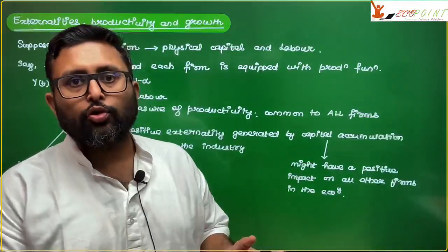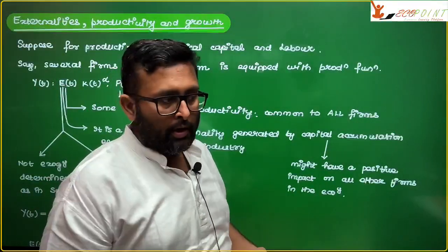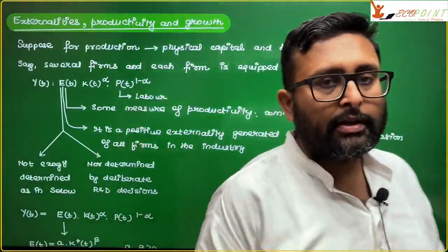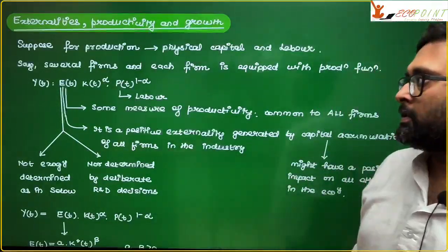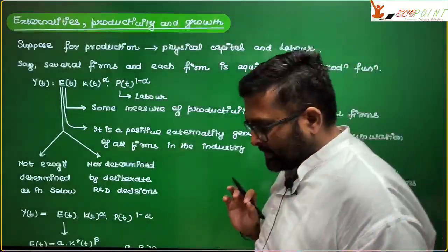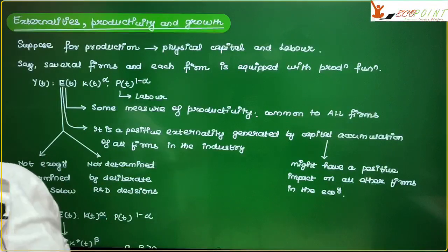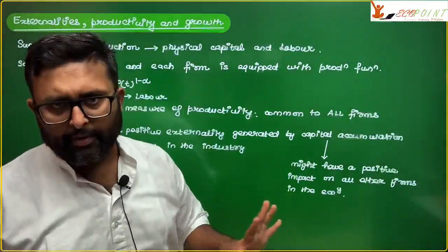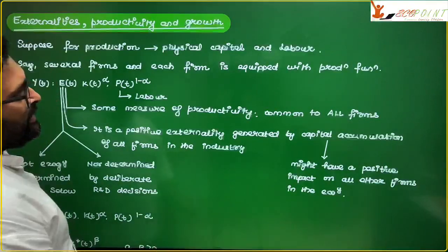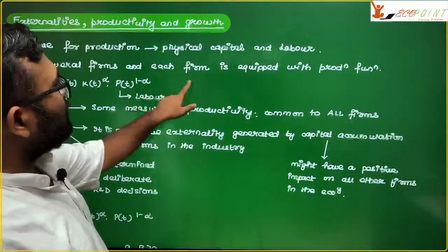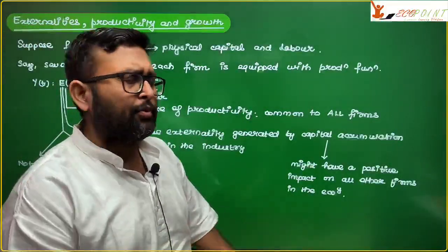In the context of growth models, when you have the endogenous, the last time you have seen the deliberate model of deliberate technical progress. Now we want to go one step back. We say, supposedly, there is a production function that is going to use physical capital and labor. All of these firms are equipped, each firm is equipped with the same production function.